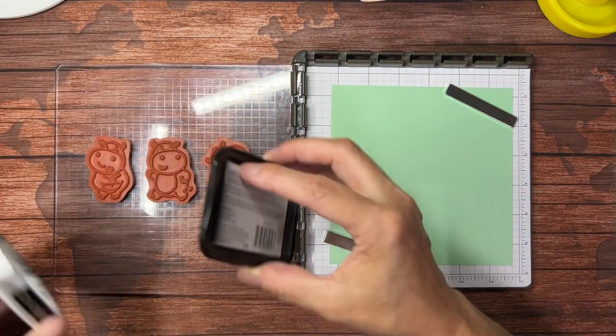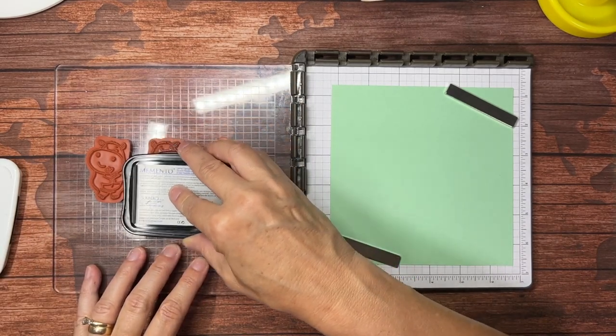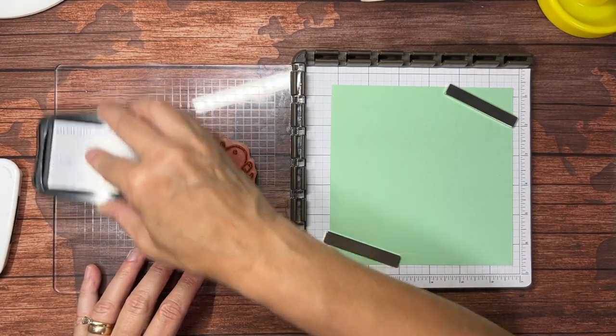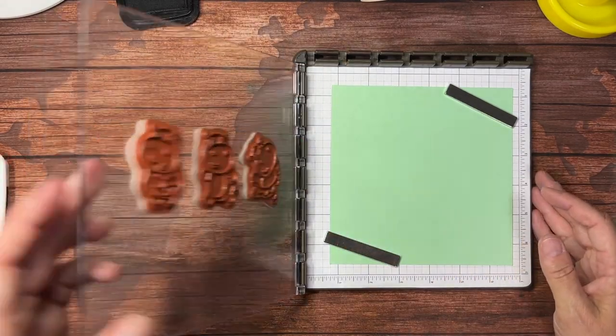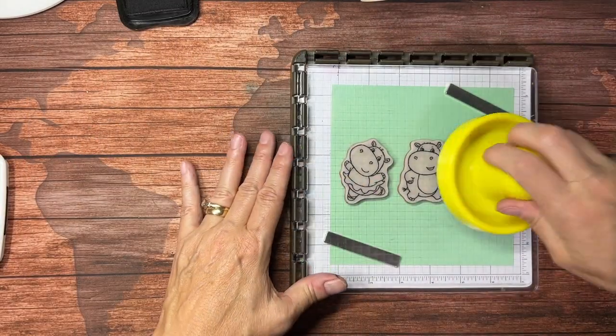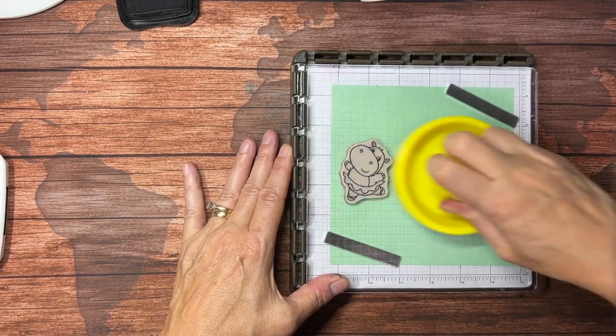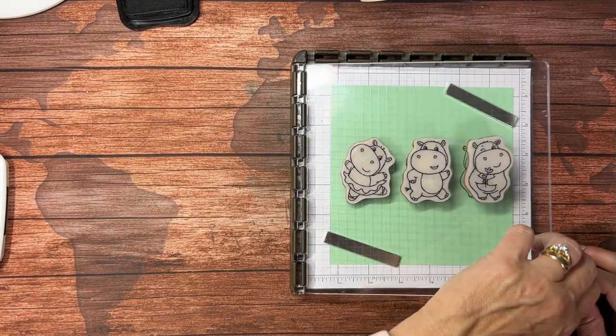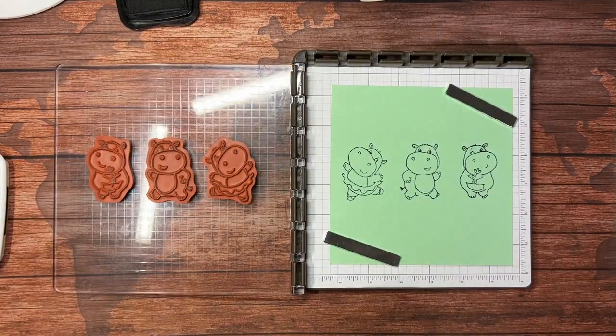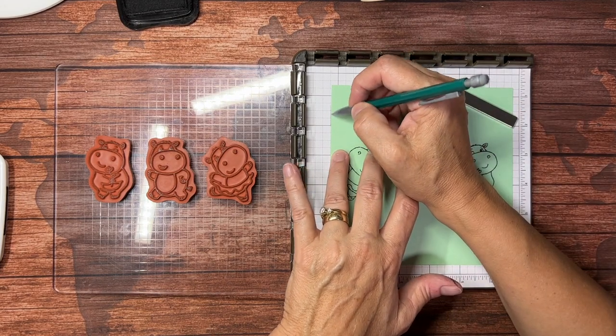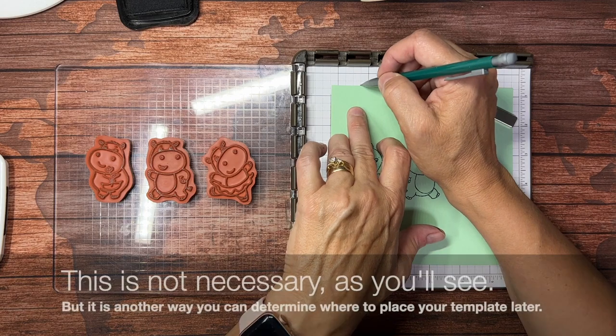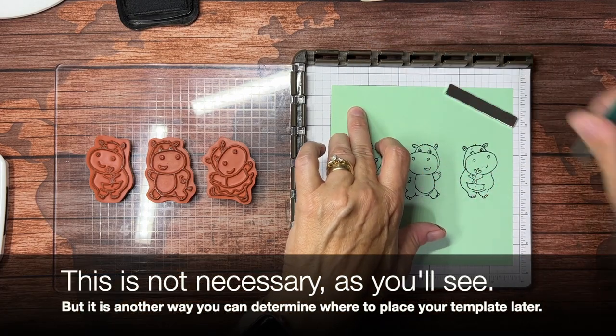I'm going to take my ink pad, ink up my hippos, stamp onto this green piece here. And while I'm at it, there's another way you can do this, but I'm going to just sort of draw some lines around where my template goes.